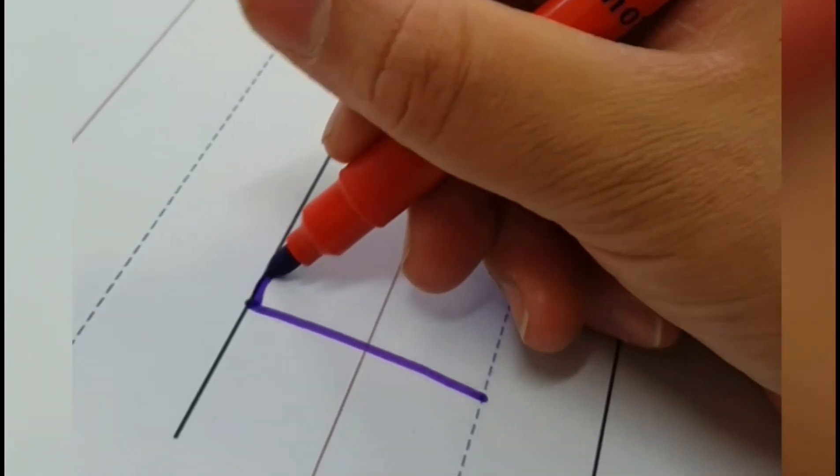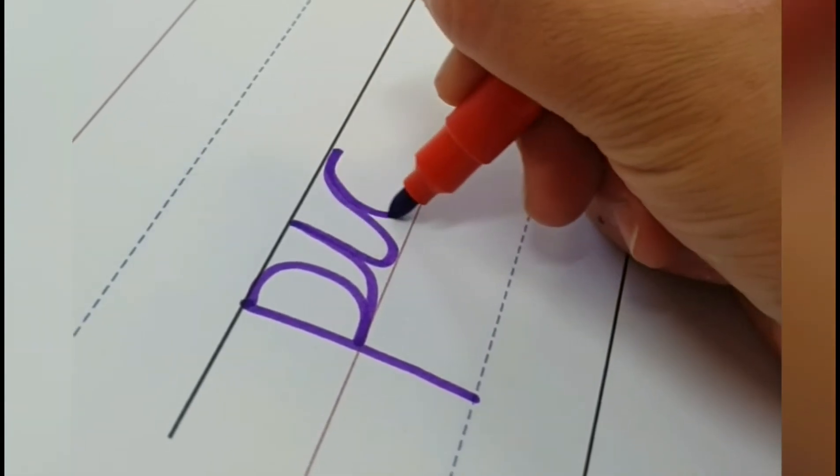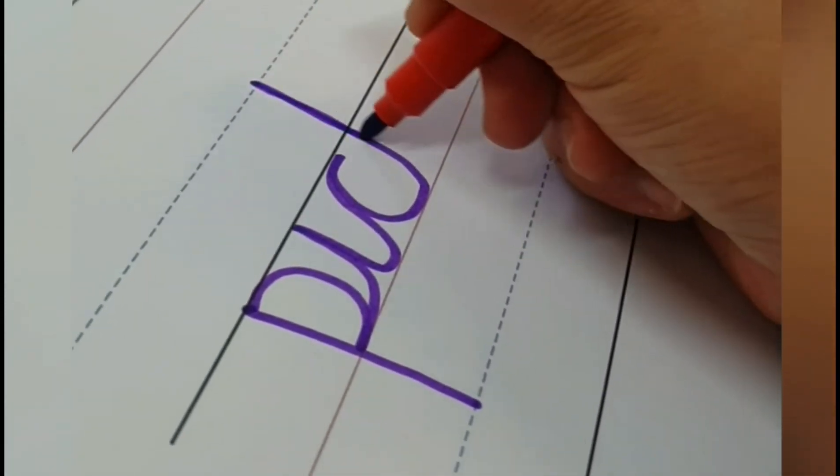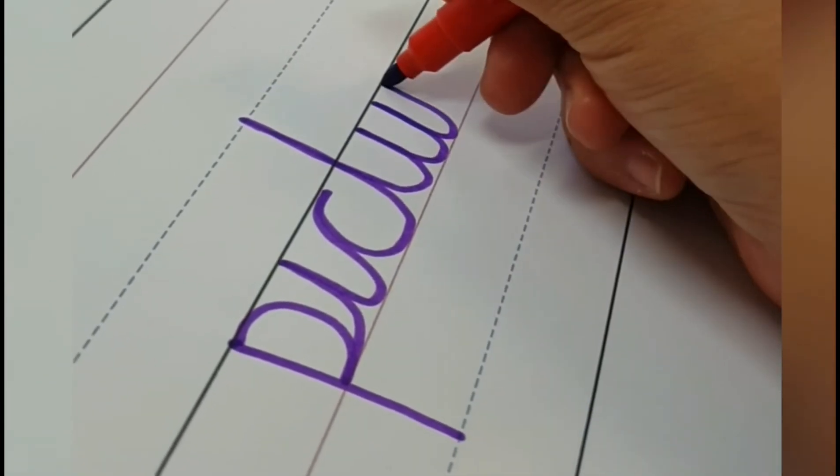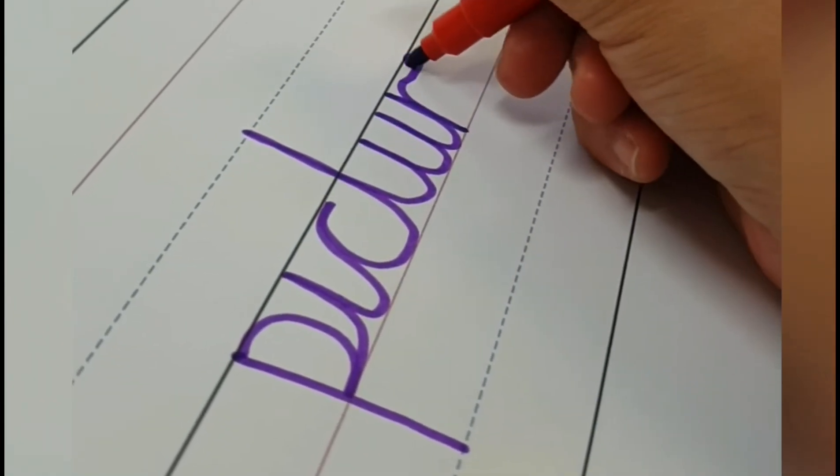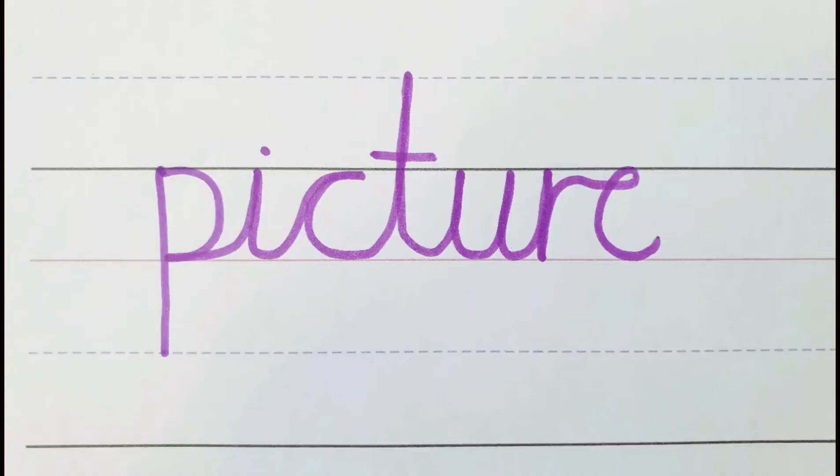Second word is picture. P-I-C-T-U-R-E. A picture is a painting or a drawing. Remember to take your P down to the bottom broken line, your T to the top broken line and cross your T and dot your I.